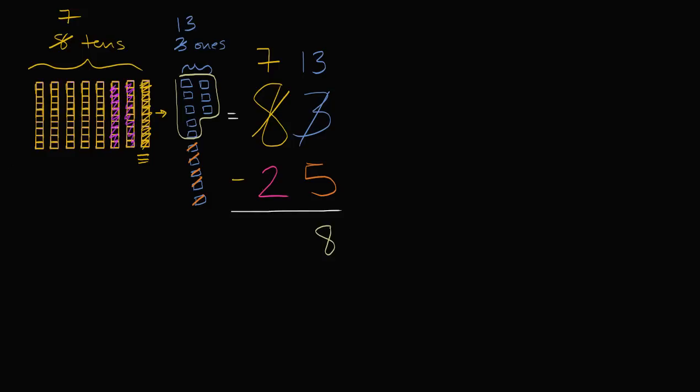And how many are we left with? Well, we are going to be left with one, two, three, four, five. We are going to be left with five 10s. Seven minus two, seven 10s minus two 10s is five 10s.